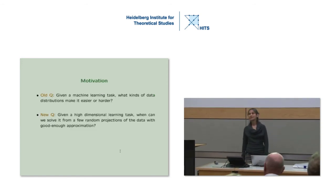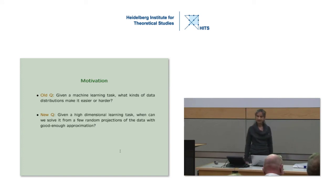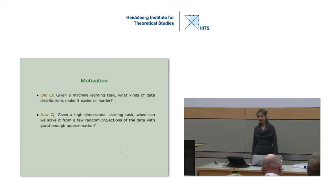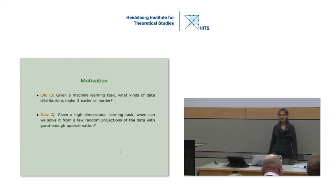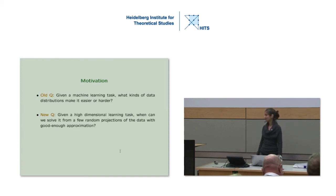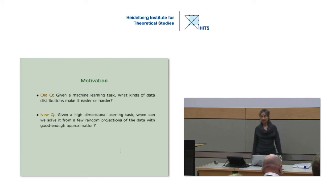We will pursue two goals. The first is quite old—it asks a fundamental question about learning by machines: given a machine learning task, what kinds of data distribution make it easier or harder? For example, if you have a two-class classification problem, you get some data, run your classifier, and sometimes it works really well, sometimes not so well. So what makes the difference? It's an old question and some things are known, but we should try to figure out more.